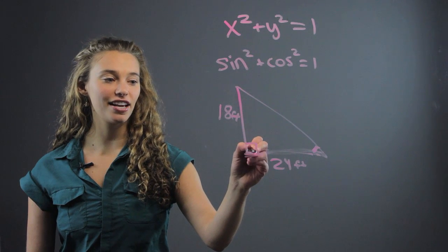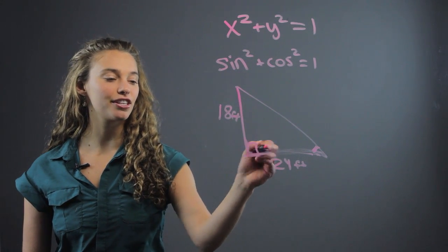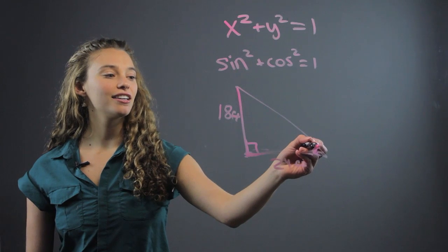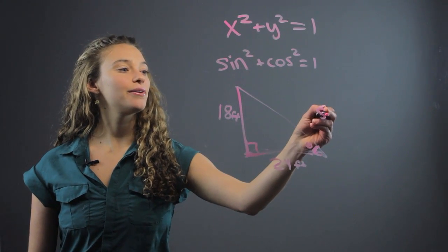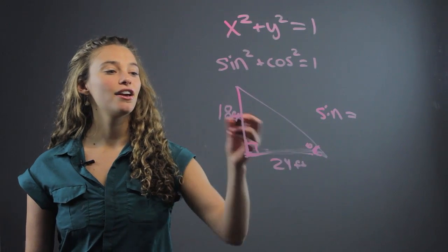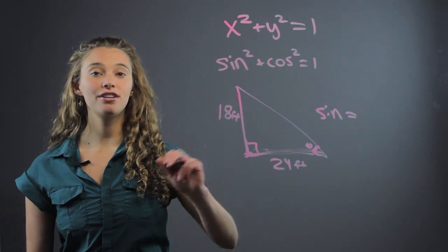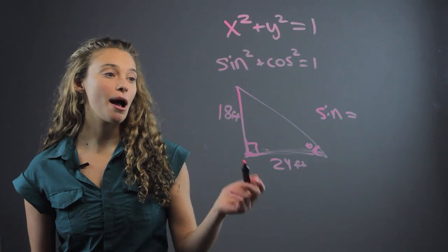Well, this is a 90 degree angle from the flagpole to the ground, so you can find the sine of this angle. And we know that sine is going to be opposite over hypotenuse.